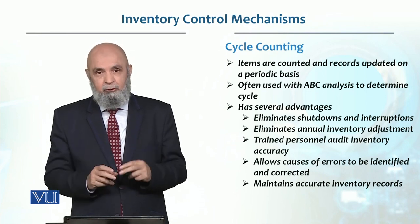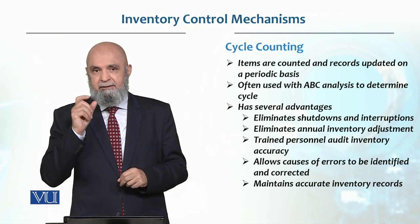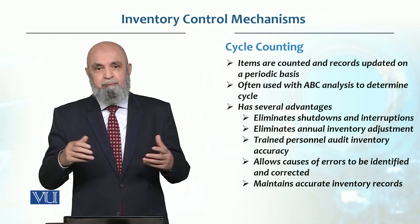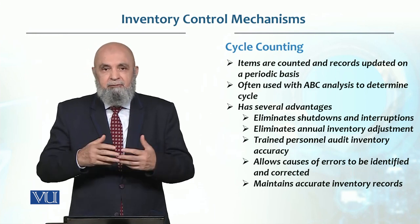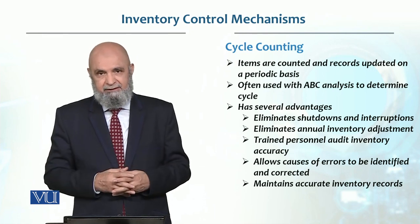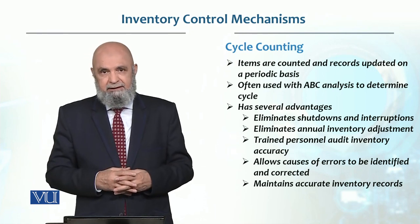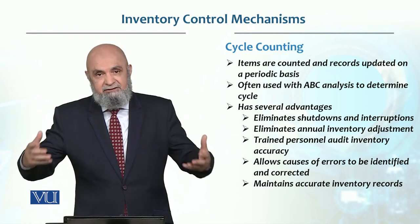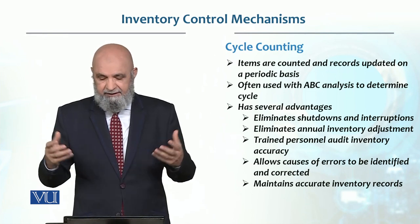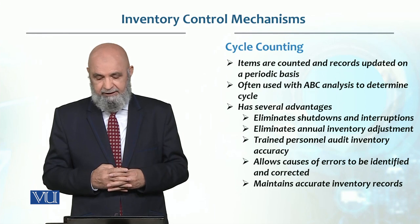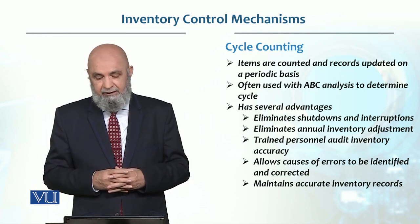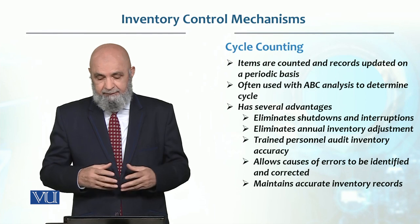Inventory levels — because A items are the most critical and most valuable products — require tight control, so we will probably do cycle counting for them monthly. For B category, we will do it quarterly, every three months. For C category, we might do it every six months.